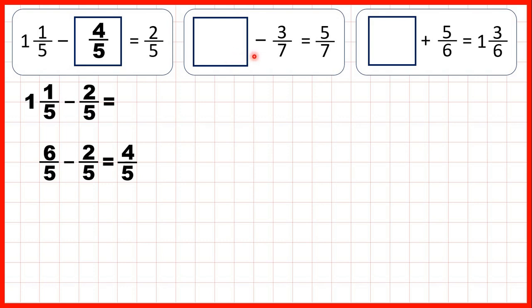Now, something minus three-sevenths equals five-sevenths. So this time it's the first number, or the minuend, of our subtraction that's missing. So remember, subtraction problems can be read backwards as addition problems. So to find our missing fraction, we need to add five-sevenths and three-sevenths.